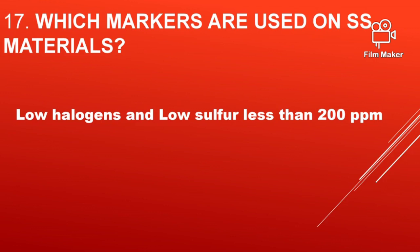Which markers are used on stainless steel materials? Low halogens and low sulfur markers are used. The sulfur level must be less than 200 ppm.